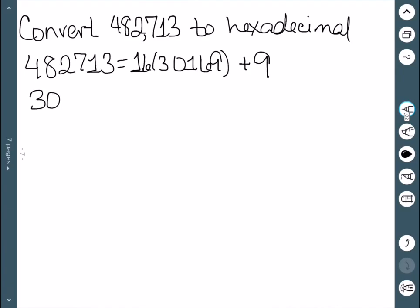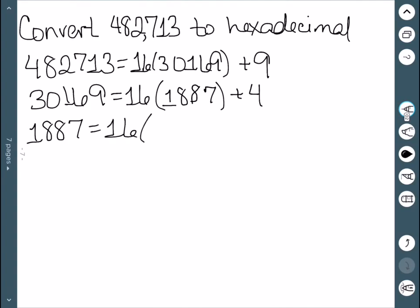Our next step is to take that quotient and divide it by 16. When we do, we get a quotient of 1,887 and a remainder of 4. We now divide that number by 16. This gives us a quotient of 117 with a remainder of 15.